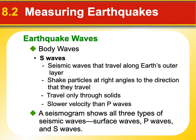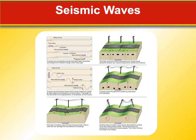S waves shake particles at right angles to the direction they're traveling — if they're moving forward, they shake right to left, like shaking a slinky side to side. S can stand for 'shake,' though it technically means secondary. S waves can only travel through solids and they go slower than P waves, so they arrive second. A seismograph will show all three types: P waves, S waves, and surface waves.